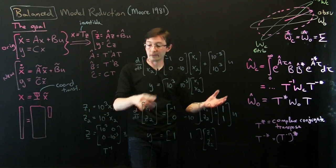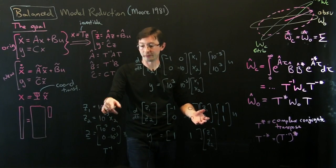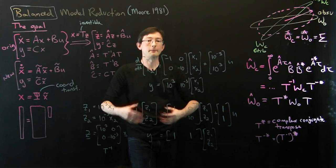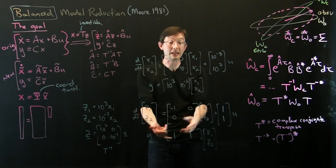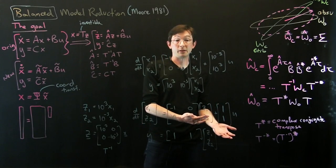What I do is I coordinate transform so that now everything's in meters. I multiply this by a thousand, I divide this by a thousand, and when I write them in meters, I get these balanced dynamics where now x1 and x2 are equally controllable and observable.